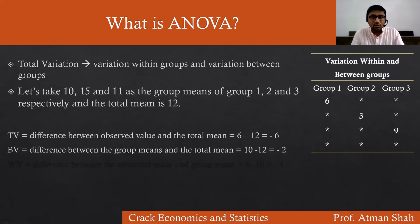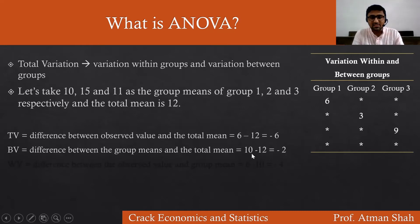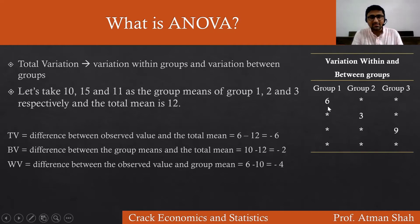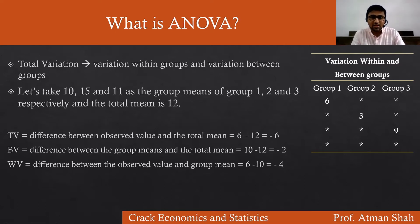Between-group variation shows the difference between the group means and the total mean. So the mean of group 1 is 10, the total mean is 12, giving 10 minus 12 equals minus 2. Similarly, for group 2 it is 15 minus 12, and for group 3 it is 11 minus 12. Variation within groups is the difference between the observed value and the group mean. The observed value 6 falls in group 1, whose mean is 10, so it is 6 minus 10, which equals minus 4. Similarly, for group 2 it is 3 minus 15.